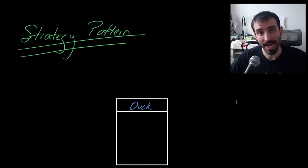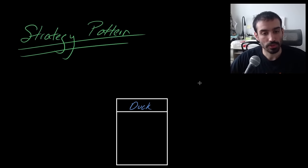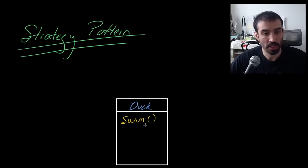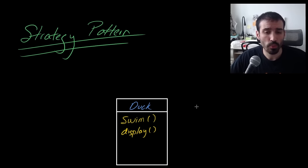We're going to walk through an example of the strategy pattern as it applies to a real-life scenario from this book. They're talking about ducks, and ducks have different behaviors associated with them. All ducks can swim, so all ducks would have a swim function. And maybe all ducks also have a display function that just prints out the characteristics of the duck. Now, what would happen if we wanted to add a flying function?